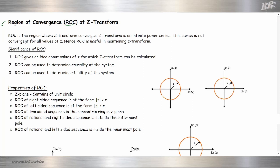Region of Convergence is a region where the Z-transform converges. The Z-transform is an infinite power series, and this series does not converge for all values of Z. ROC is useful in defining the Z-transform.